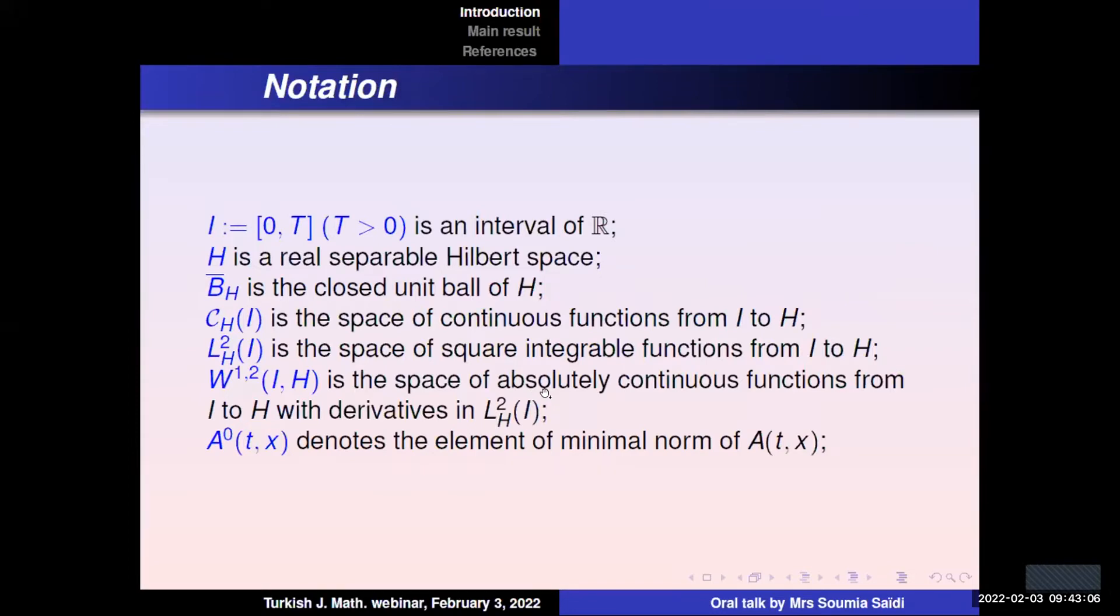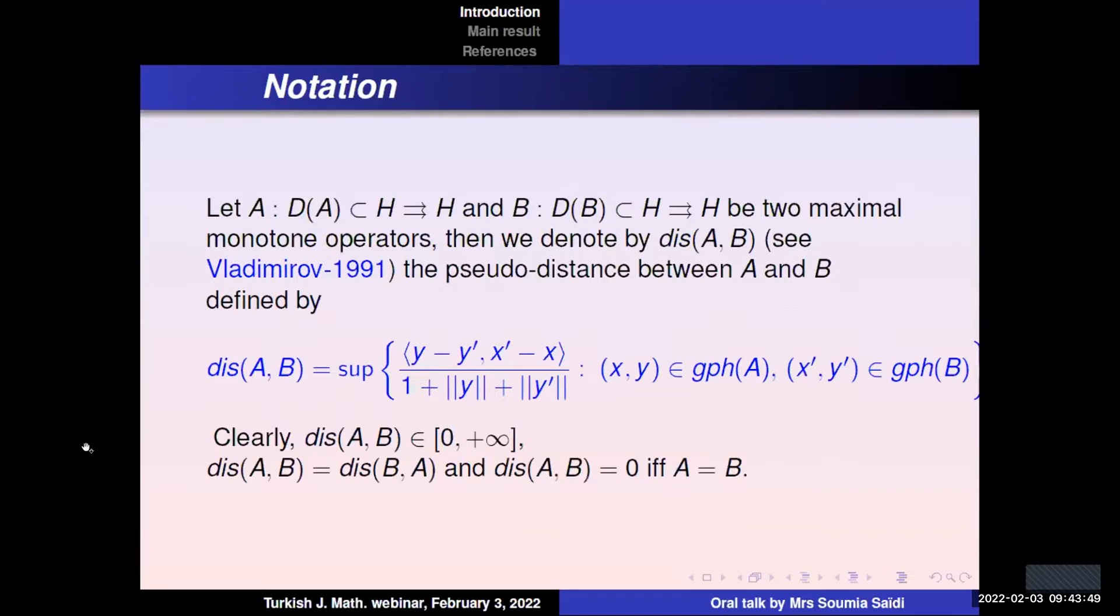We use the following notation. I for an interval of R, H a real separable Hilbert space, B_H the closed unit ball of H, C(I,H) the space of continuous functions from I to H, L^2(I,H) the space of square integrable functions from I to H, W^{1,2} is the space of absolutely continuous functions from I to H with derivative in L^2. And we denote by A^0(T,x) the element of minimum norm of the operator A(T,x). We deal with the pseudo-distance between two maximal monotone operators A and B introduced by Vladimirov in 1991, defined as follows and satisfying these properties.